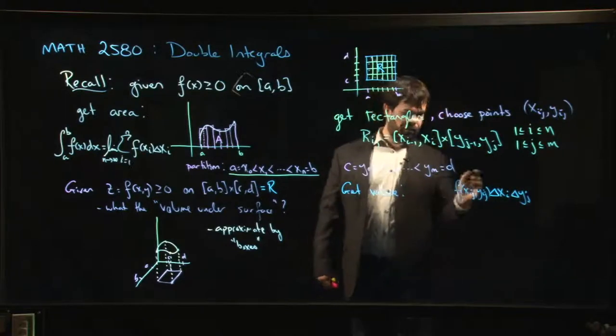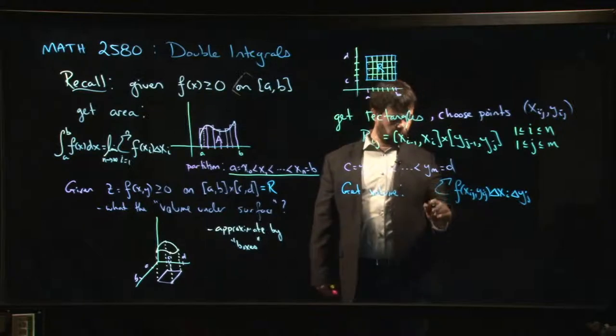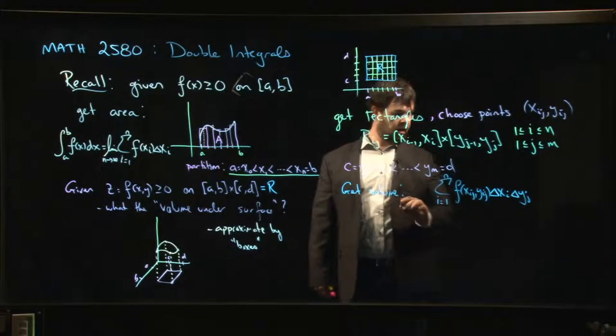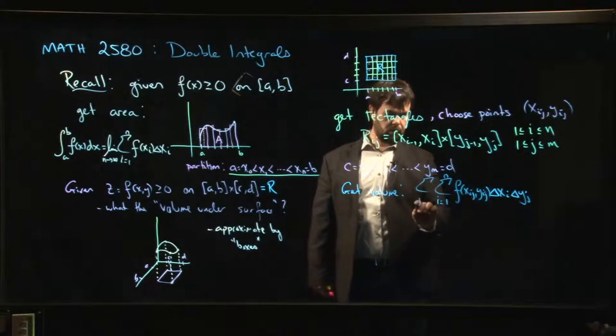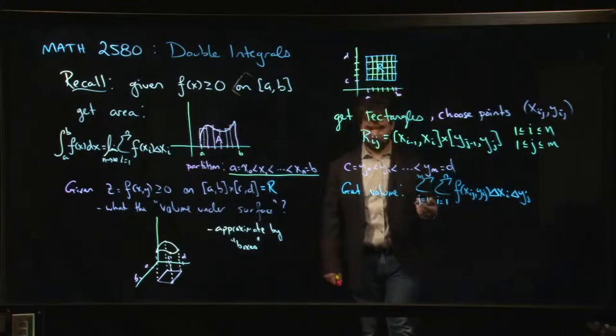We have m times n such boxes. So if we want to get the total volume, we have to add this up. So we have to sum, i going from 1 to n. But that only takes care of one direction. We've also got a sum in the other direction. So let's say j going from 1 to m. We've got to account for all of those. So you get this sort of double sum.